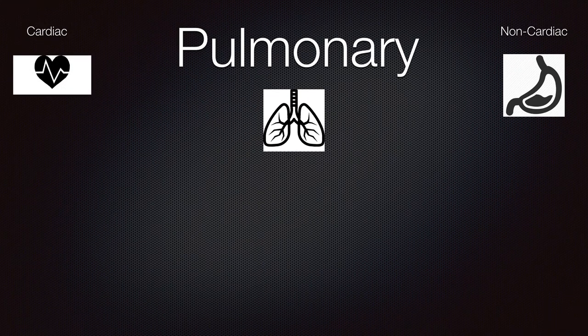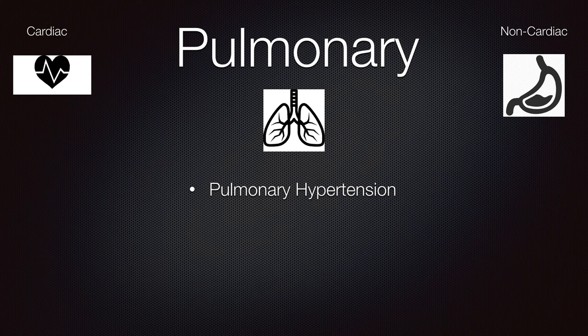For pulmonary differentials, the first is pulmonary hypertension. The symptoms and signs are typically those of right heart failure — shortness of breath and pulmonary congestion. These patients will typically have an echocardiogram to assess heart function and anatomy.